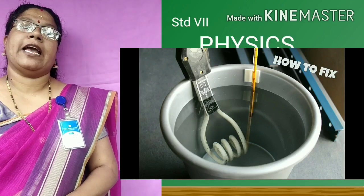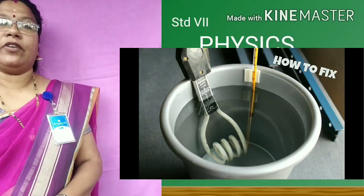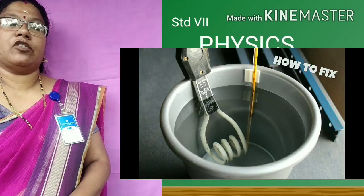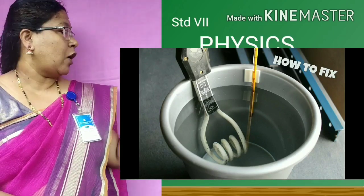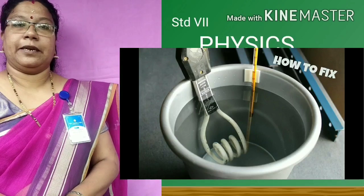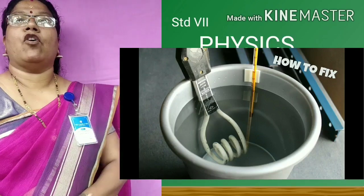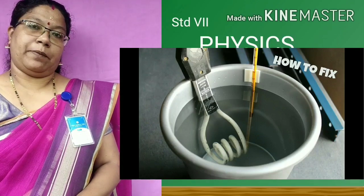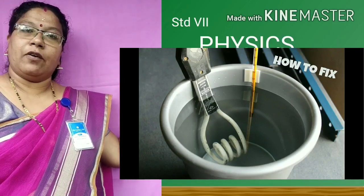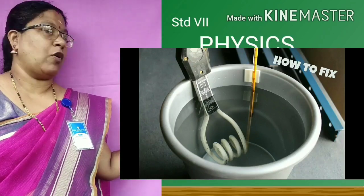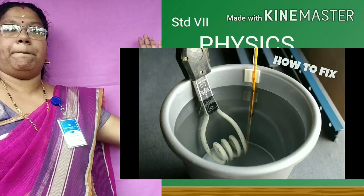We first immerse the immersion rod in the bucket of water, as you see in the figure. The immersion rod is dipped into the water, then the switch is turned on. The coil gets heated, and the heat is transferred to the water surrounding the coil. The water surrounding the coil becomes hot, and this hot water near the immersion rod moves up.